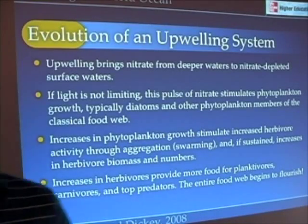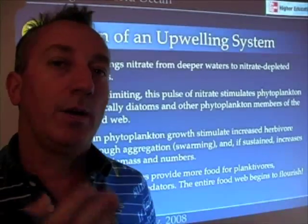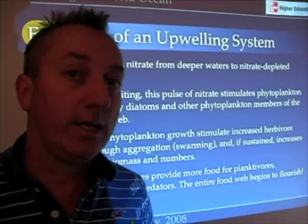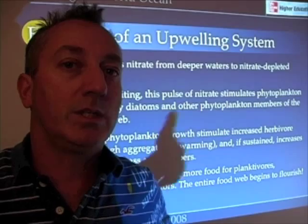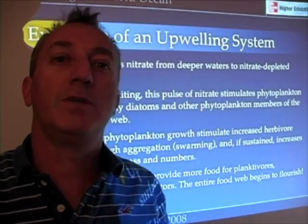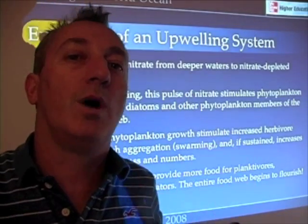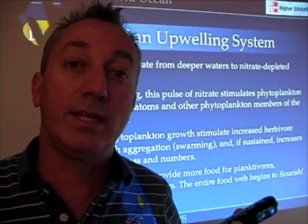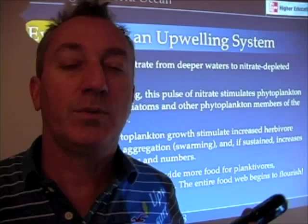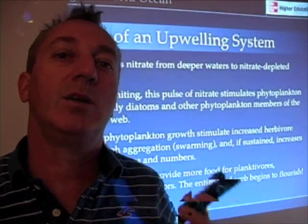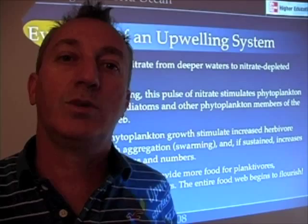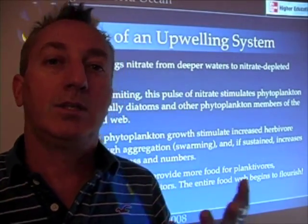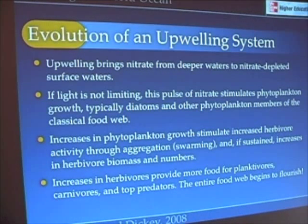Upwelling brings nutrient-rich water up towards the surface, particularly in nitrate-depleted oceans. It brings nitrate up to the surface in places that were otherwise previously nitrate-depleted. The phytoplankton took up that nitrate originally; when they run out of nitrate they quit growing. But now that nitrate is present, and if there is sufficient light present, it stimulates a bloom of phytoplankton.